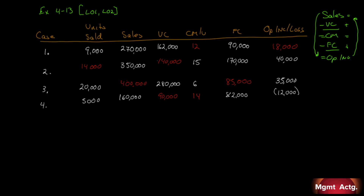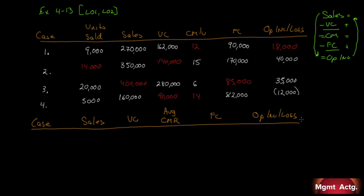Part B has different headings. The columns are: sales, variable expenses, average contribution margin ratio, fixed costs, and operating income or loss. We have four more cases to solve.